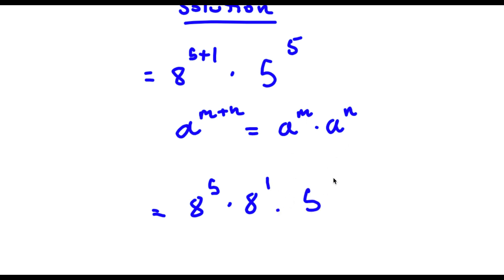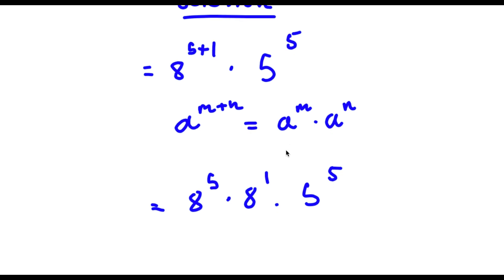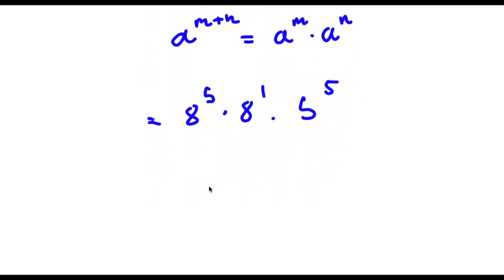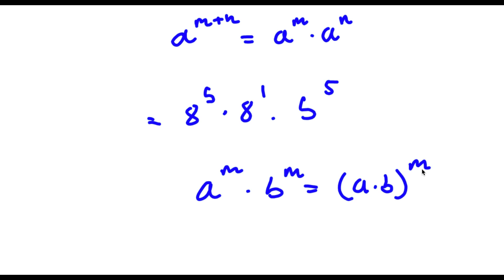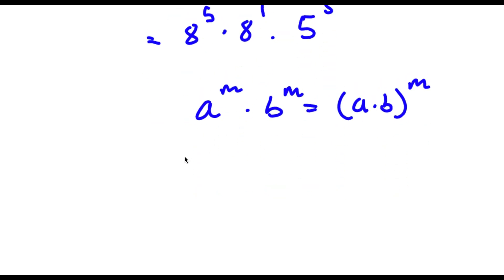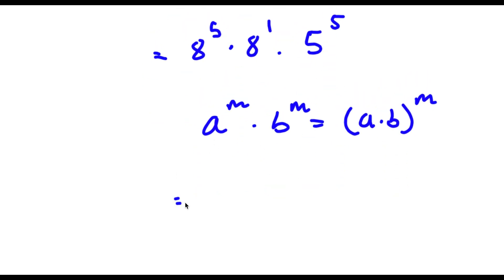Now this times 5 to the power of 5. If I have something in the form a to the power of m times b to the power of m, this is the same thing as a times b to the power of m. So in this case I have a to the power of 5 times 5 to the power of 5, and because these two have the same exponents, I can multiply these two.